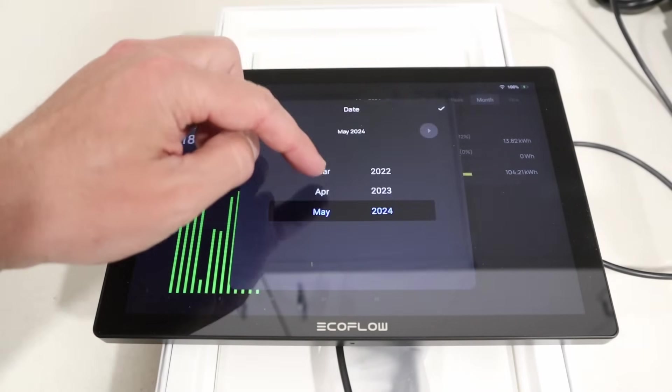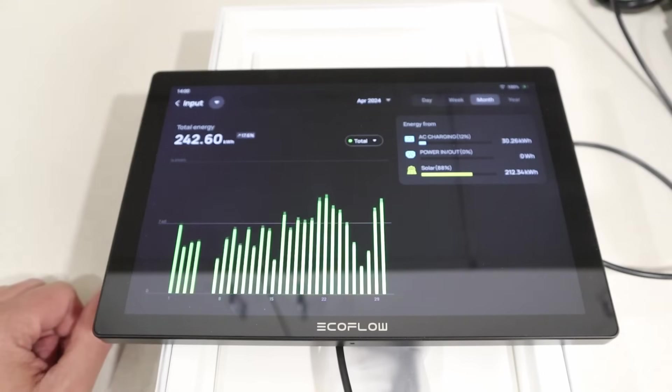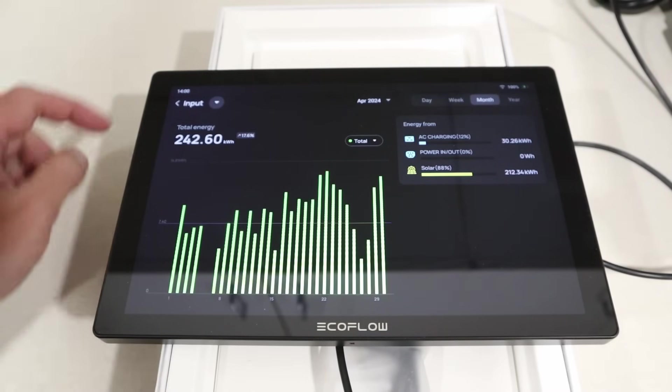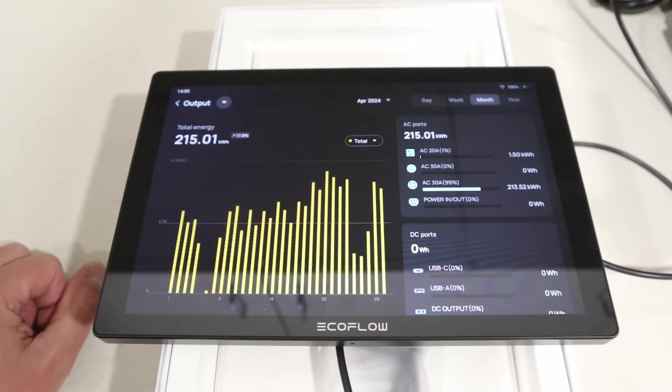If we break this down by the month of April, give us a good idea of a full month of usage. I did go on a small little trip here. That's why this is off. But for the full month, it's 242 kilowatt hours of solar input. And if we go look at the output, it's 215 kilowatt hours out from the battery.